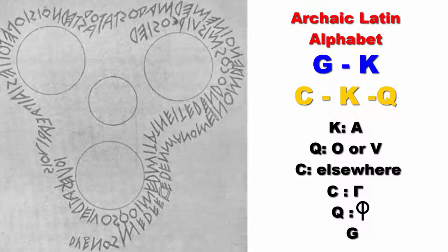C derived from the Greek Gamma, and Q derived from the Greek Coppa. G was invented later on — it was simply a C with an additional stroke.